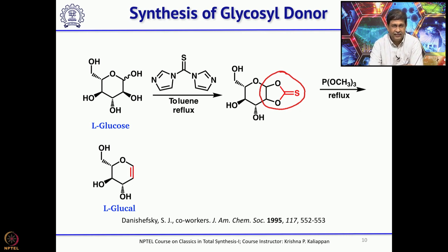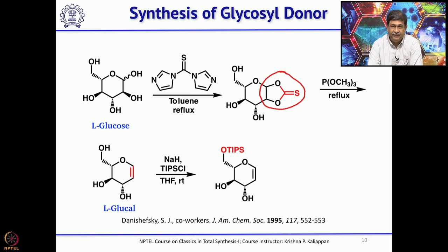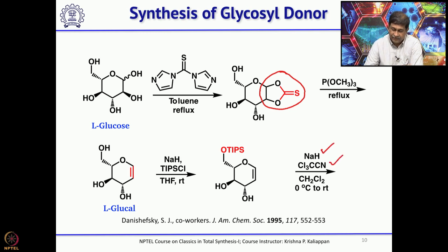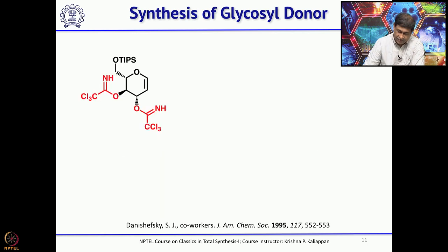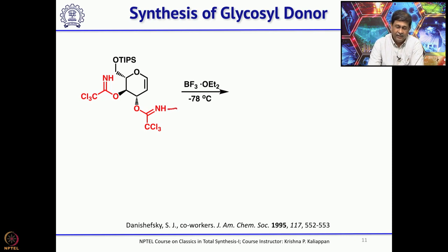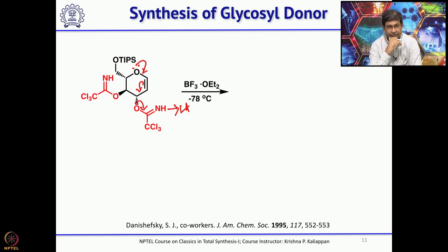This compound is called L-glucal. Once you have the primary alcohol it can be selectively protected as a TIPS ether by treating with sodium hydride and TIPS chloride. Then the two secondary hydroxyl groups, upon deprotonation with sodium hydride followed by addition of trichloroacetonitrile, form the trichloroacetimidate. Treatment with BF3·etherate allows the Lewis acid to coordinate with the nitrogen, and the lone pair on the oxygen of L-glucal expels the trichloroacetimidate to give the intermediate.